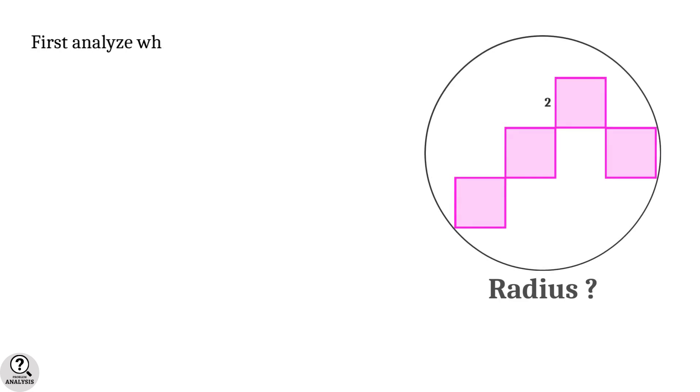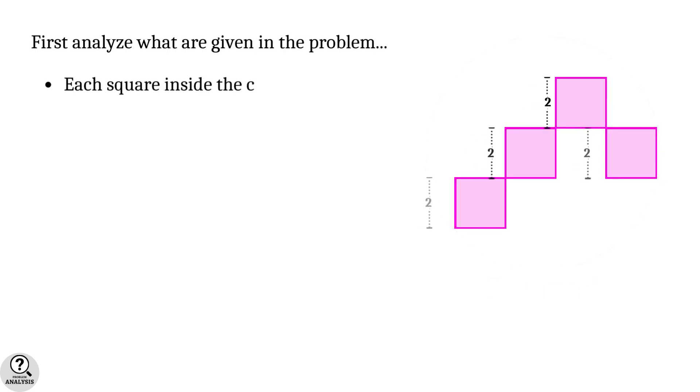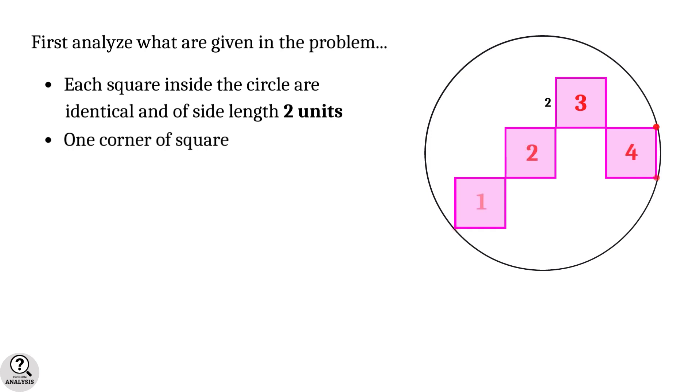First, we have to analyze the problem. We are given that each square inside the circle is identical with side length two units. One corner of square 1 and two corners of square 4 are lying on the circle.